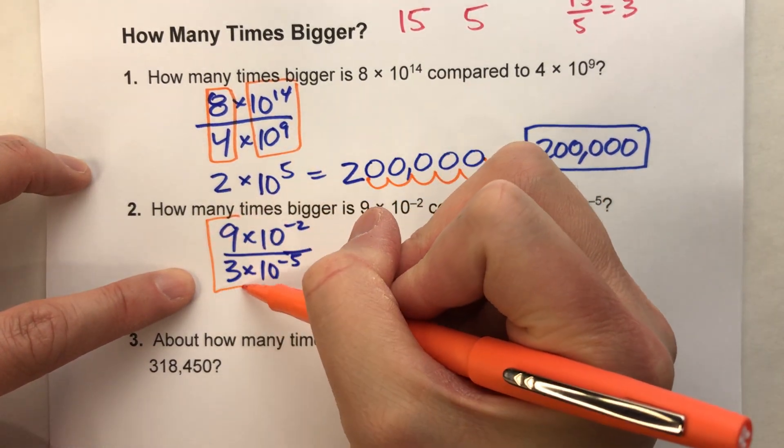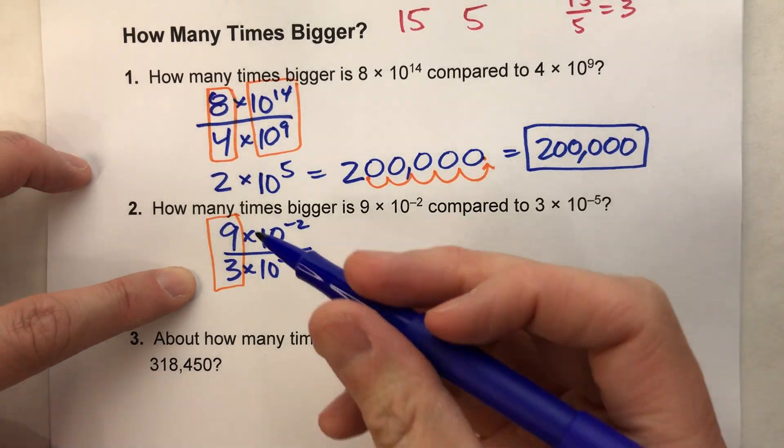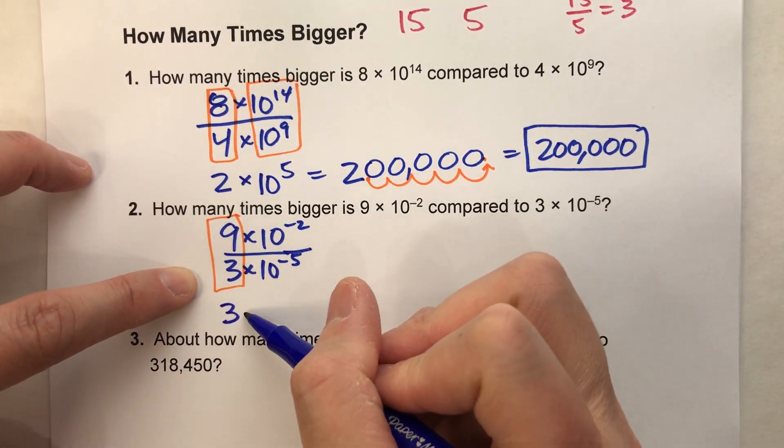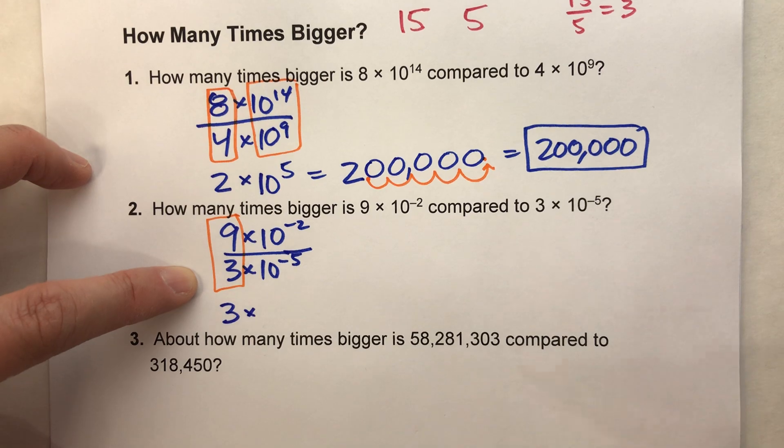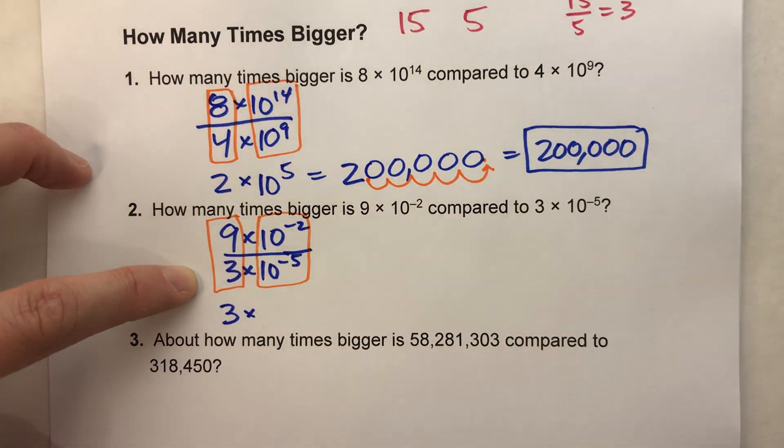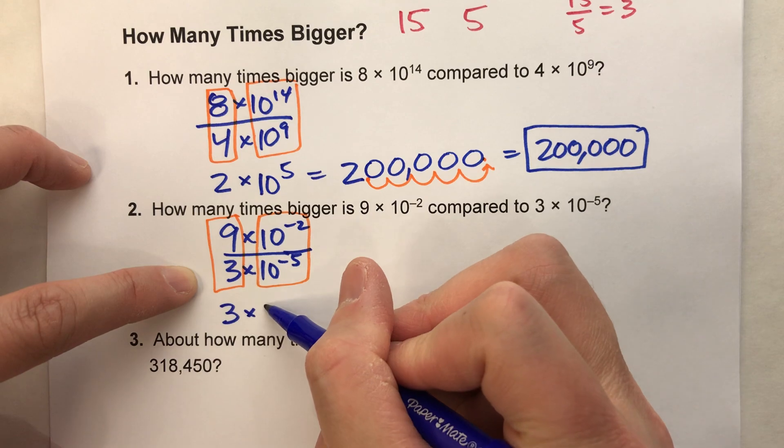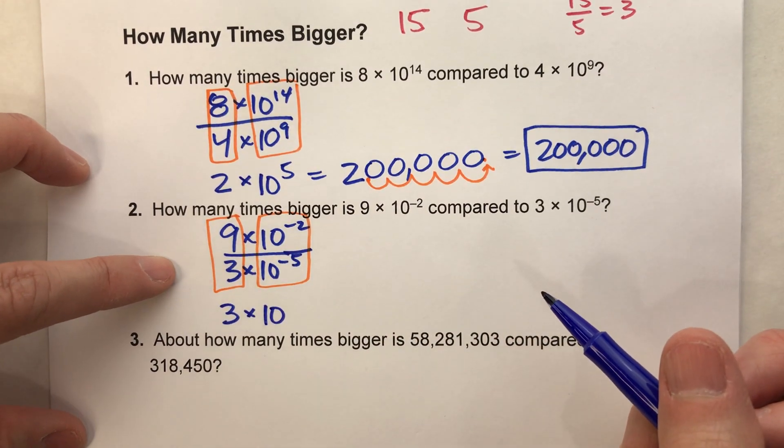So let's divide our regular numbers, 9 divided by 3 is 3 times. Now when we divide our powers, we keep the base the same, and we subtract the exponents.